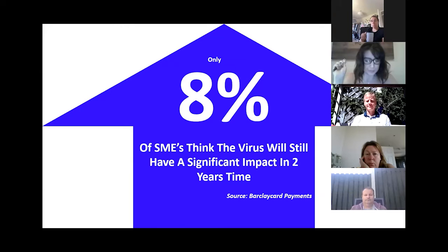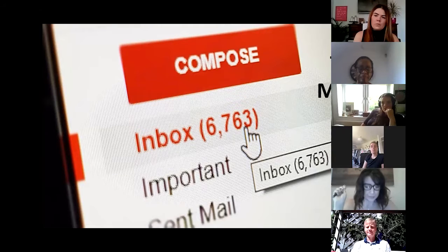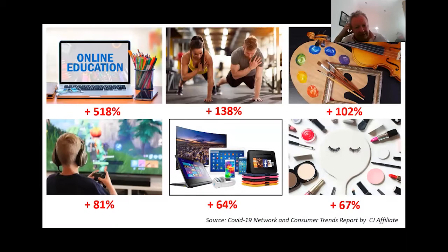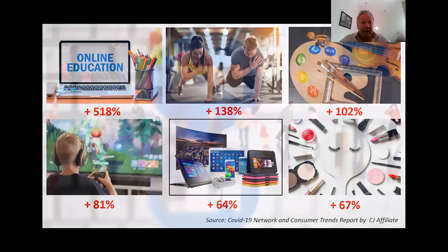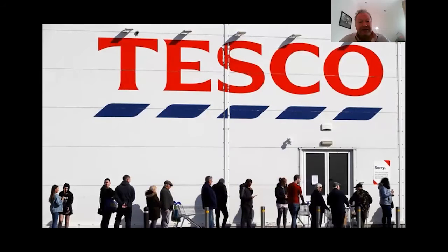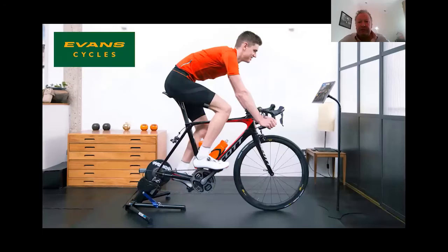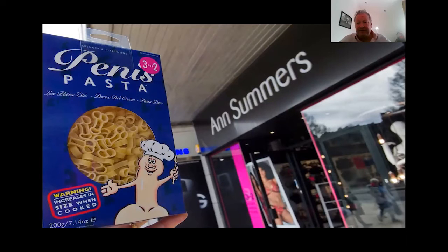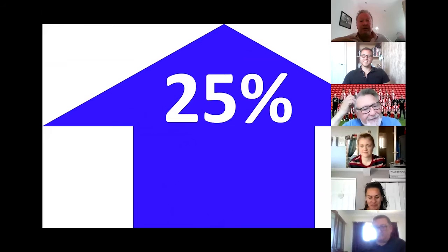Interestingly, some clients say their biggest challenge is too many customers — they've furloughed people, they're stretched. Particularly in the IT sector and manufacturing for the NHS. There are massive opportunities in online education, keep-fit, arts and crafts, gaming, and home makeup. Zoom now has 300 million users compared to 10 million in December 2019. Tesco's online sales are up 30%, Evans Cycles saw indoor cycle equipment up 997%, and pasta sales saw a 25% increase.